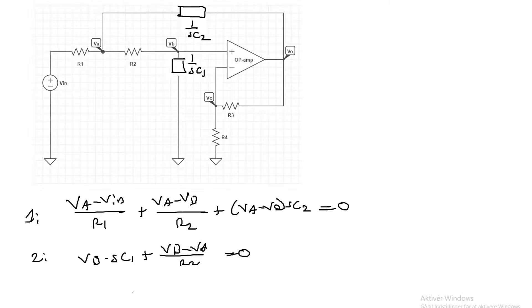Now the voltage at vc is equal to... This vc equals vo times r4 over r3 plus r4. And this is again equal to vo over k. Where k is equal to the gain of the non-inverting operational amplifier, 1 plus r3 over r4.